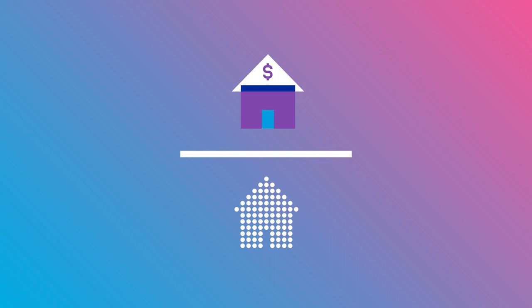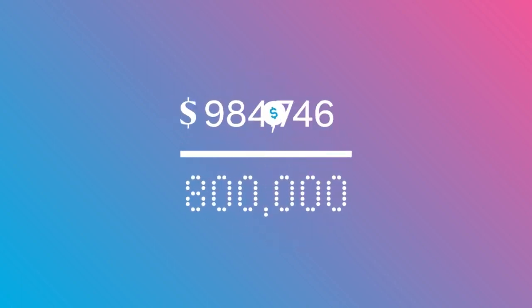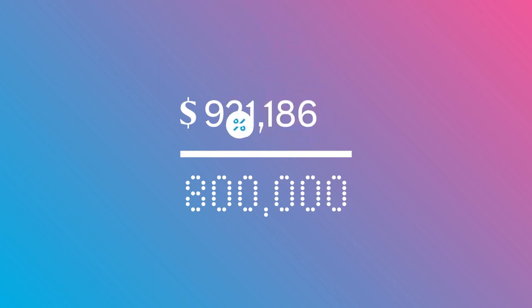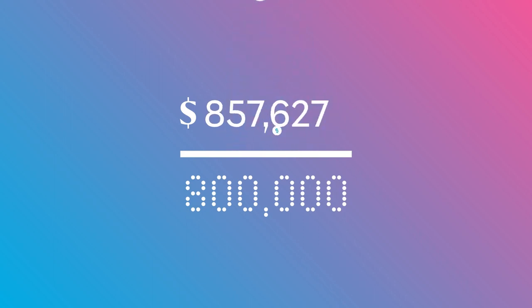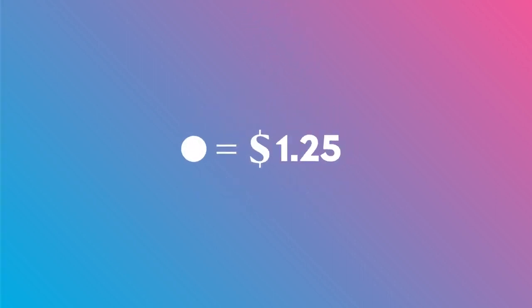Units are then allocated to your account according to how much you have contributed and the buying unit price at the time of the transaction. Unit prices are calculated by dividing the total value of the investments in each investment option on any given day by the total number of units on issue for that investment option. For example, if an investment option had one million dollars invested in it after allowing for fees and tax, and there were eight hundred thousand units on issue, then the unit price for that day would be one dollar and twenty-five cents.